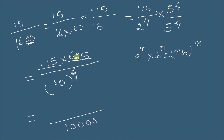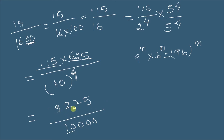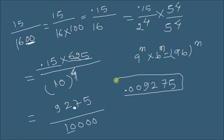Now 15 multiplied by 625: I will first multiply 15 and 625, then place the decimal. 15 times 625 equals 9375, and placing the decimal after 2 digits gives 93.75. There is division by 10,000, meaning we place the decimal after 4 digits from the right. So the final answer is 0.009375. That is the decimal expansion of 15/1600.